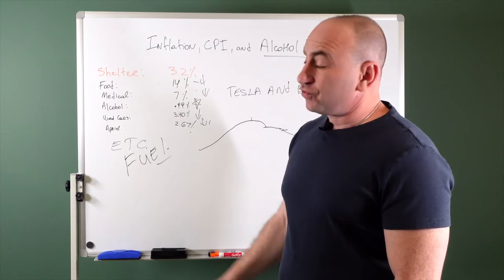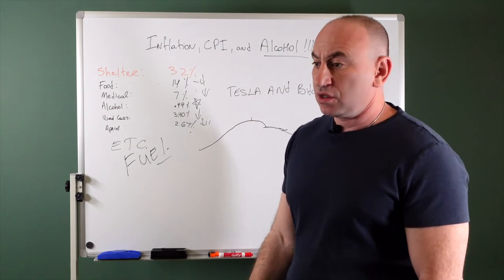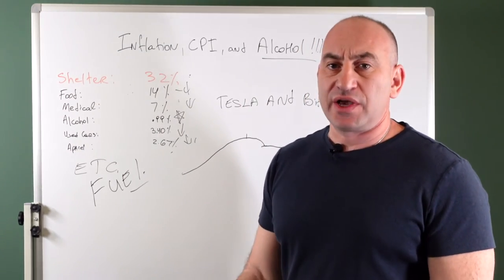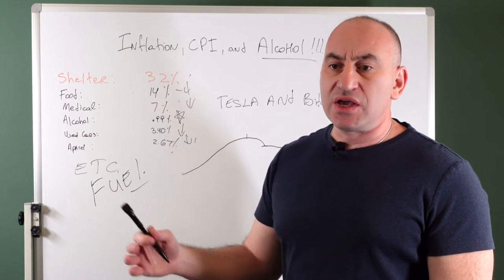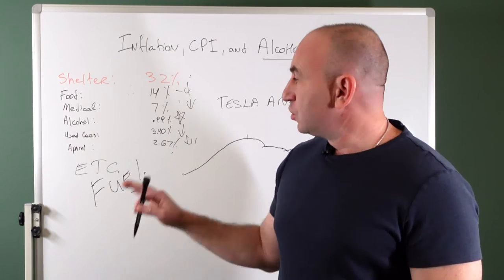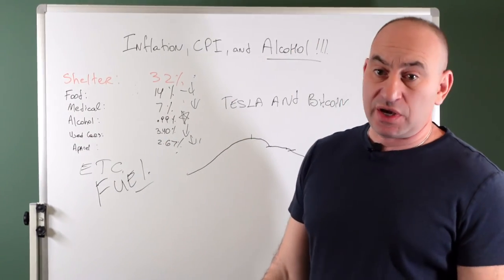The big one of course is shelter, what we pay for rent. And this number should be closely watched. It's been going up like crazy. My guess is it's still gonna go up but not at the same pace. So these are the components of the CPI.